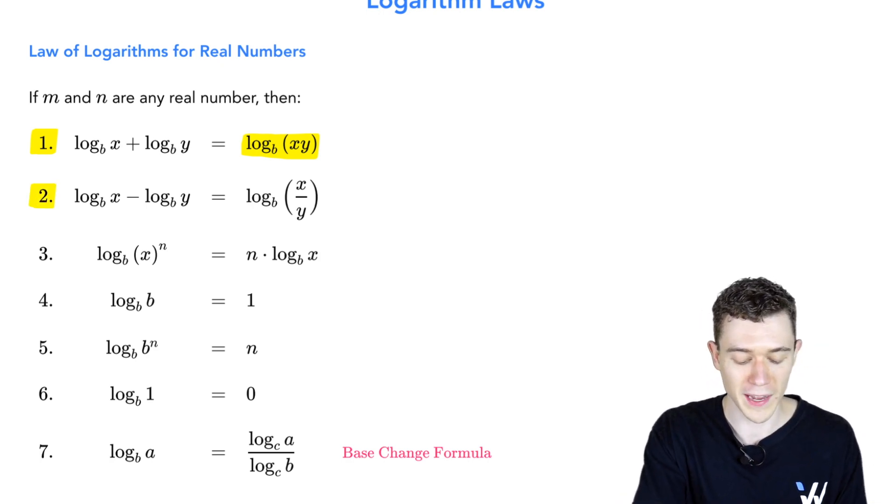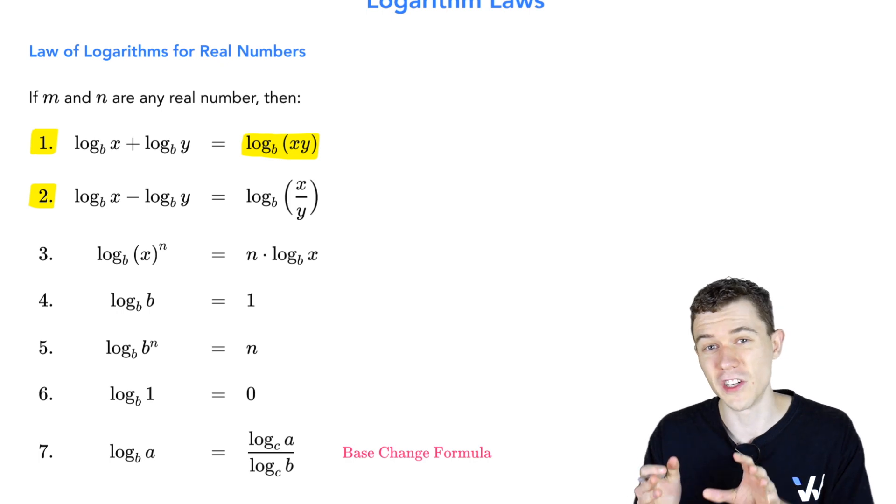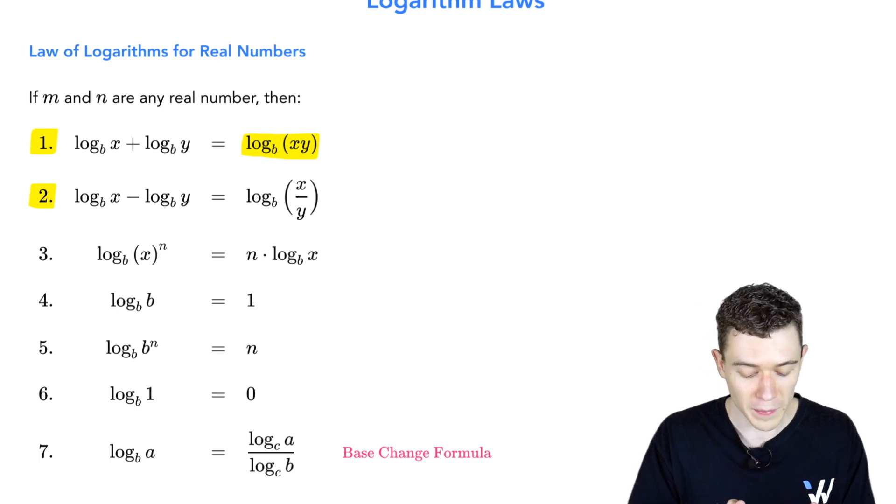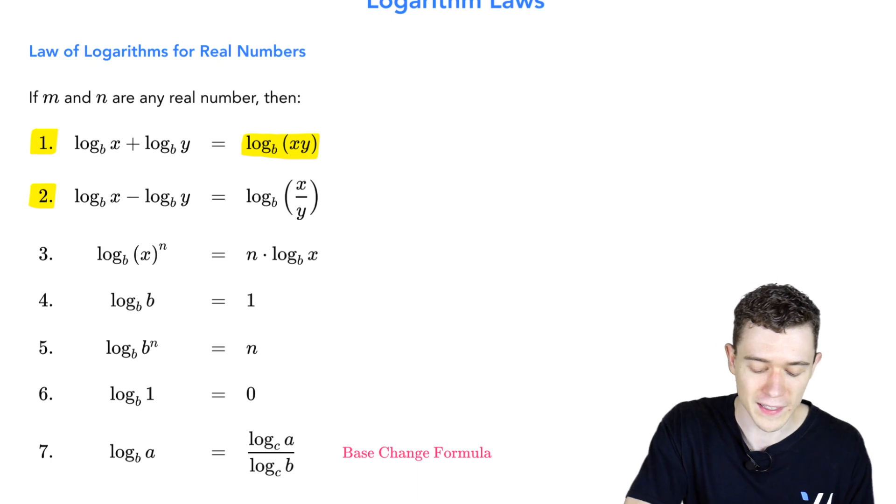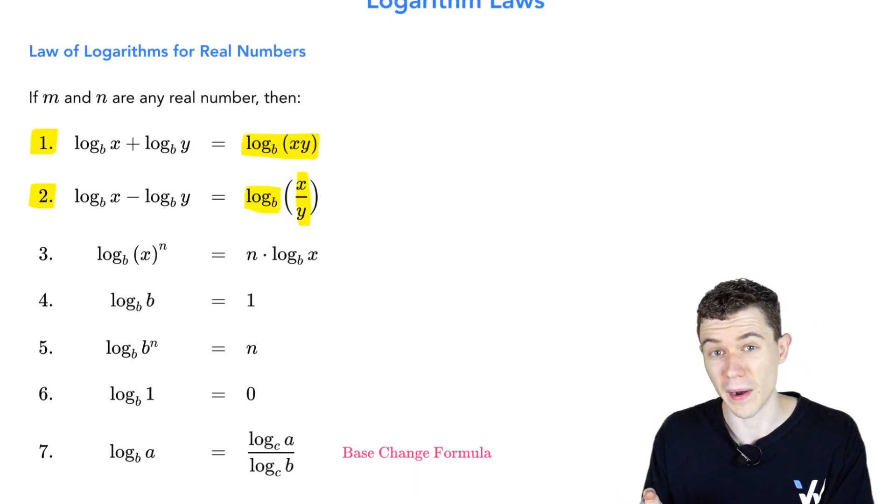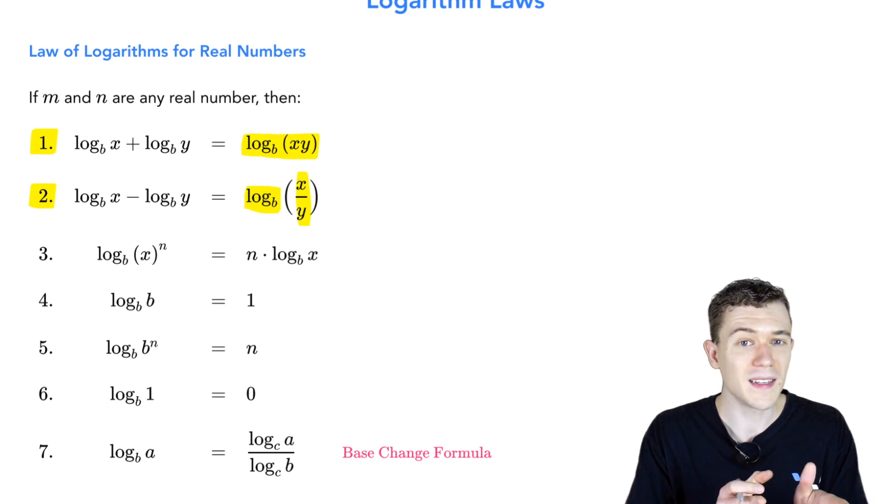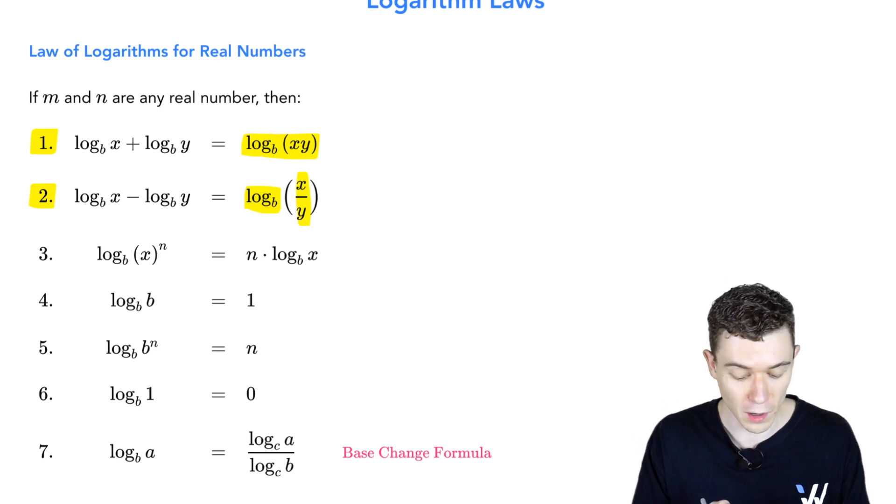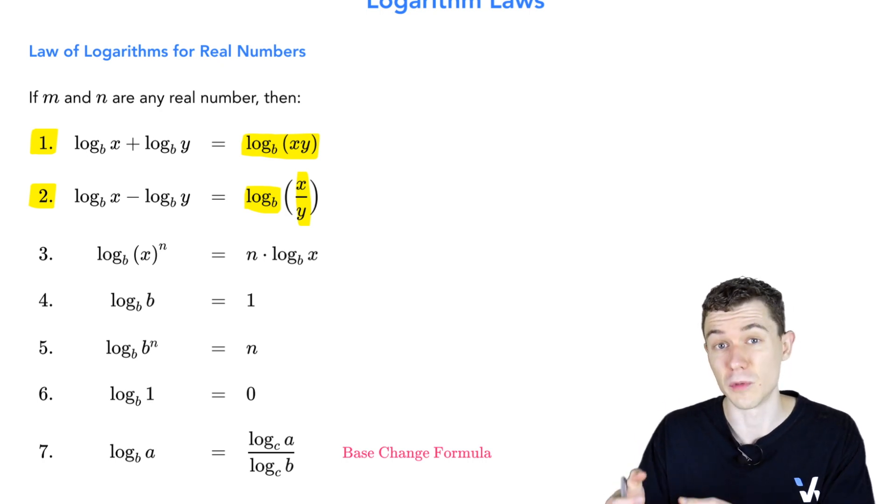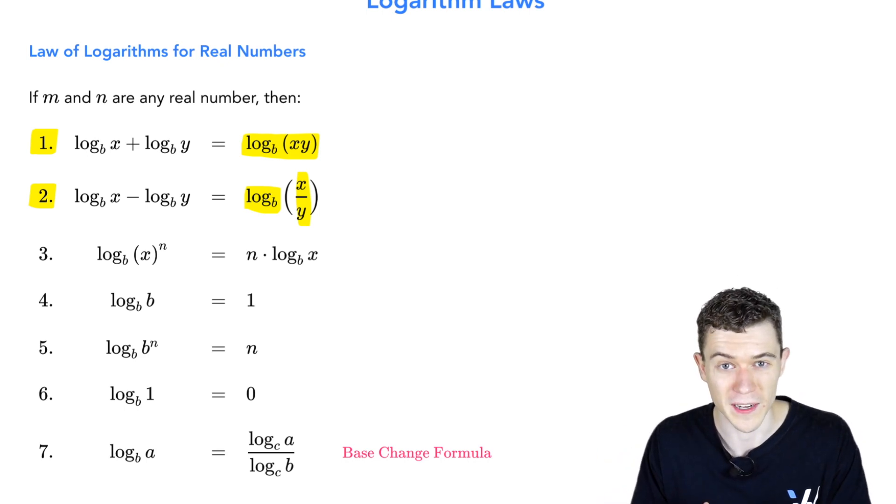If addition means multiplication, certainly subtraction should mean division. If we have log base b of x minus log base b of y, that's a single logarithm base b of the quotient, x divided by y. Notice the plus goes on top, the added logarithm. The minus, the subtracted logarithm, that's the one that goes in the denominator.